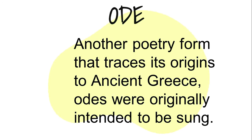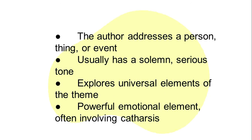Another poetry form that traces its origin to ancient Greece — odes were originally intended to be sung. Nowadays, though no longer sung, the term ode still refers to a type of lyric poem that addresses and often praises a certain person, thing, or event. The author addresses a person, thing, or event, usually with a solemn, serious tone, and explores universal elements of the theme. There is a powerful emotional element often involving catharsis. Odes written in the classical vein can follow various strict metrical patterns and rhyme schemes. However, many modern odes are written in free verse involving irregular rhythm and without adherence to a rhyme scheme.